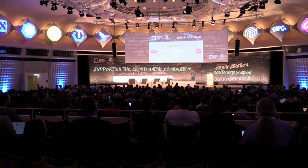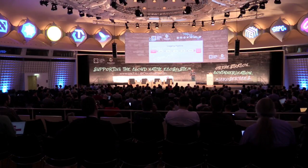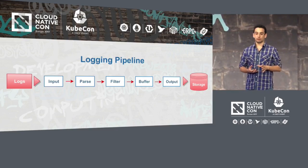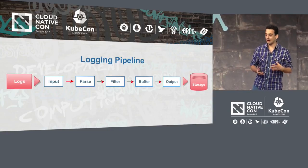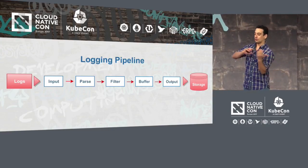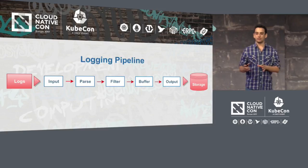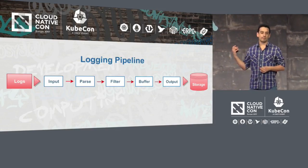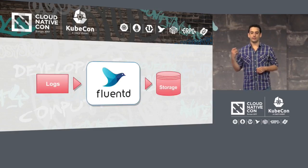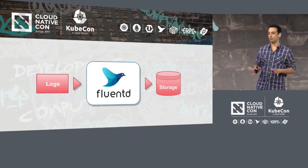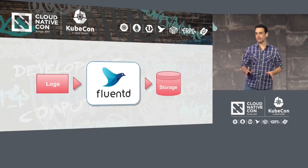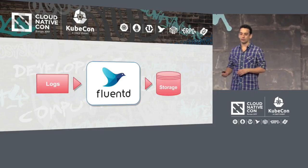For this, we have a logging pipeline. If you want to analyse all this data, you need to take the data from an input, parse the data, filter the data, and then buffer that data — because you don't want to lose it — and then send this information to a storage. That is what FluentD is: a full solution for logging that allows you to take any kind of logging information, process it, and send it to any kind of storage.